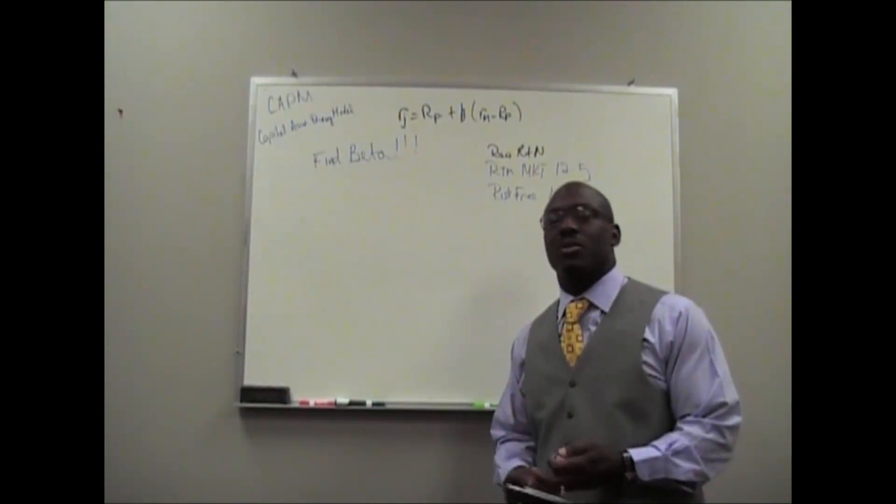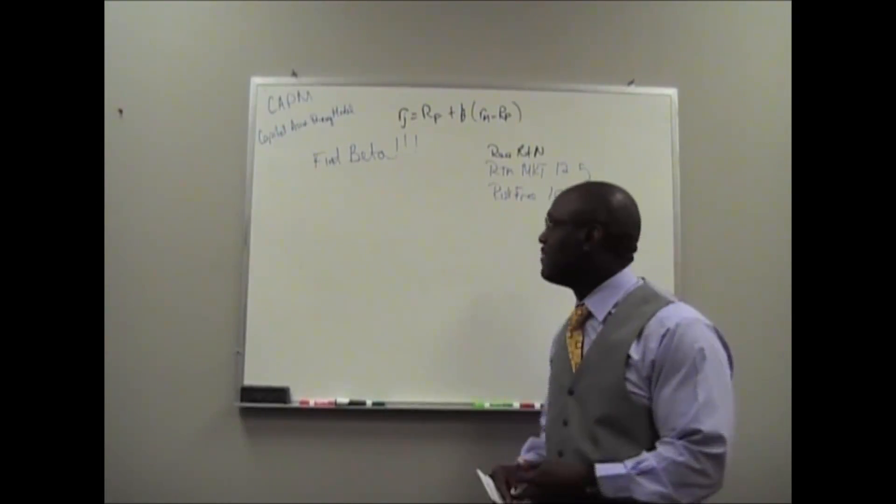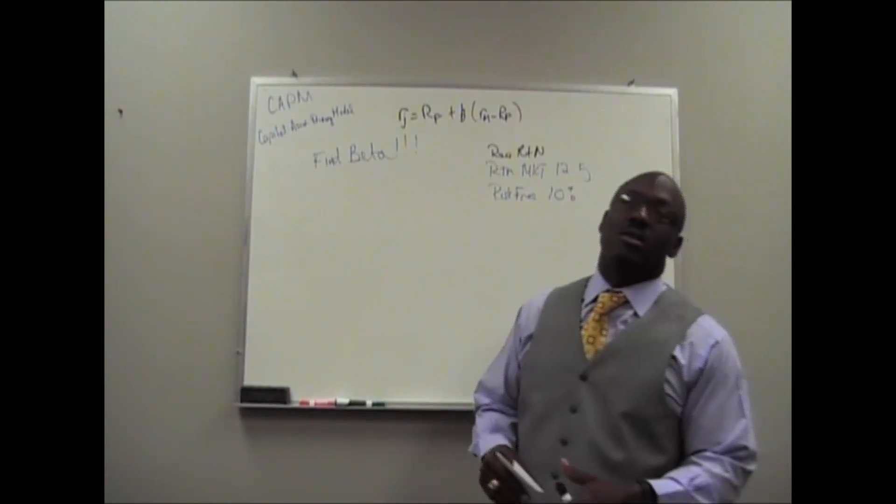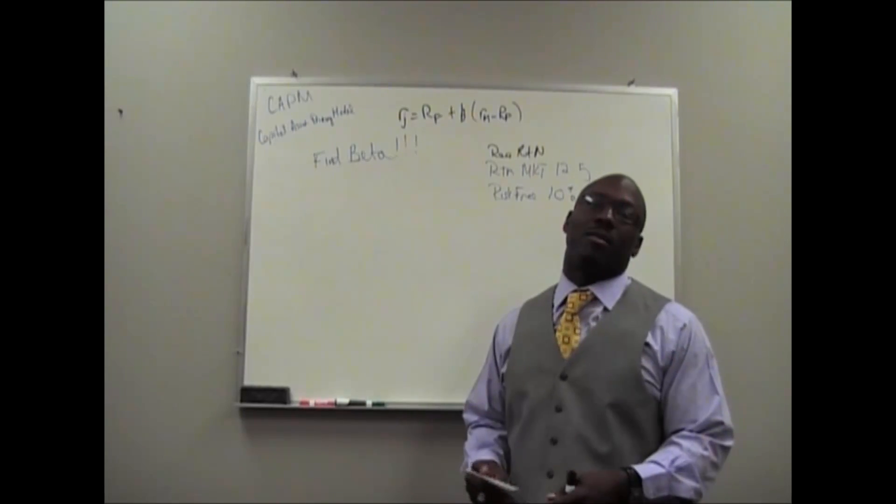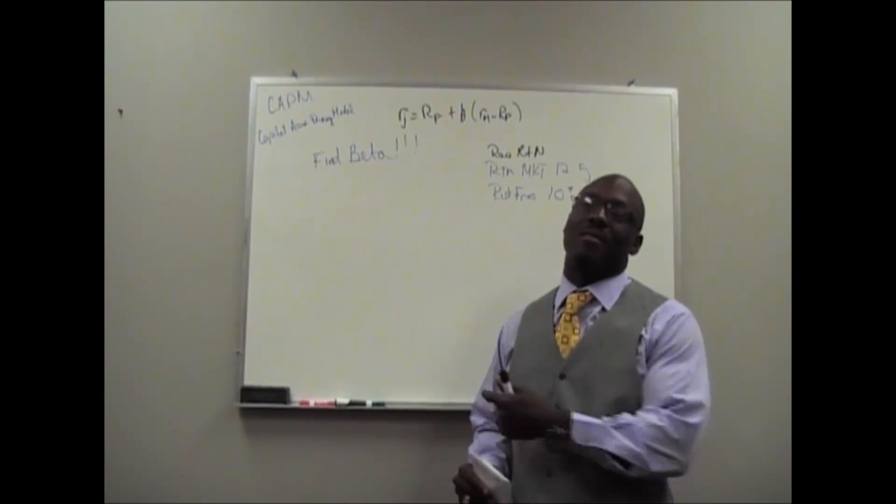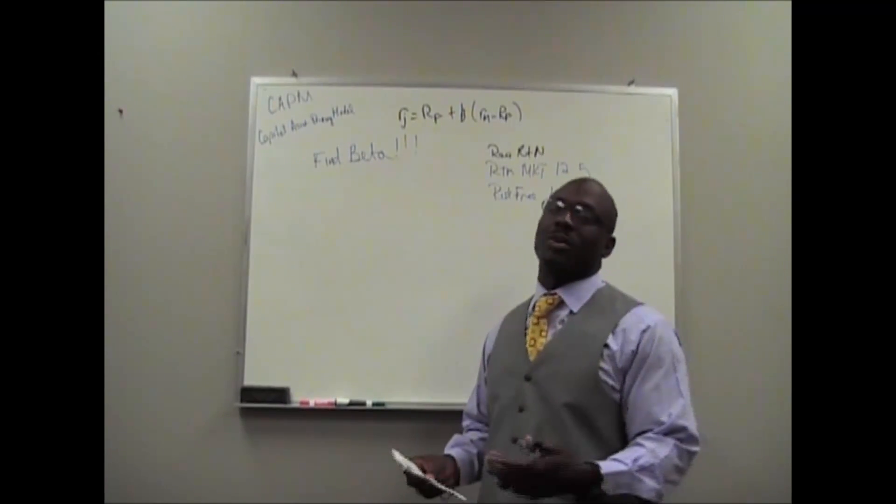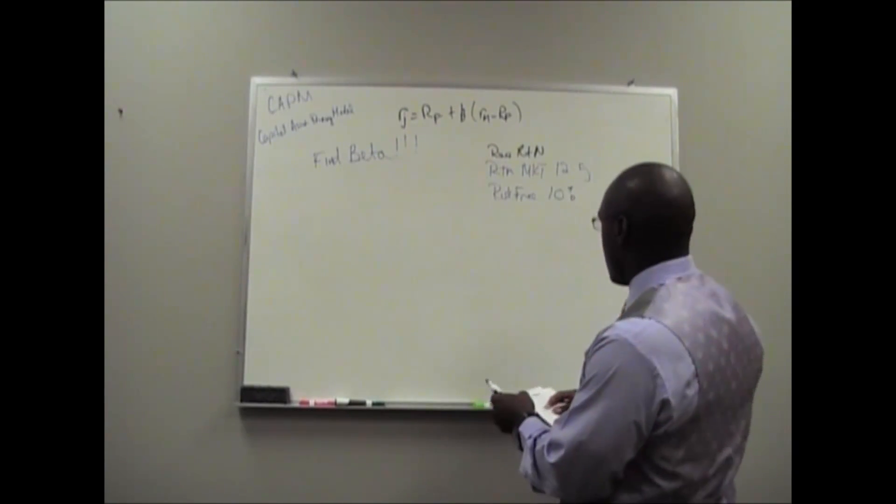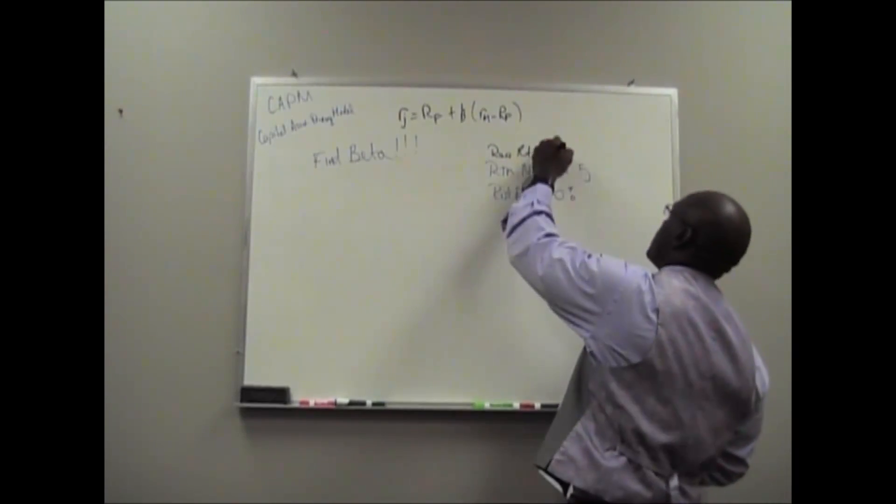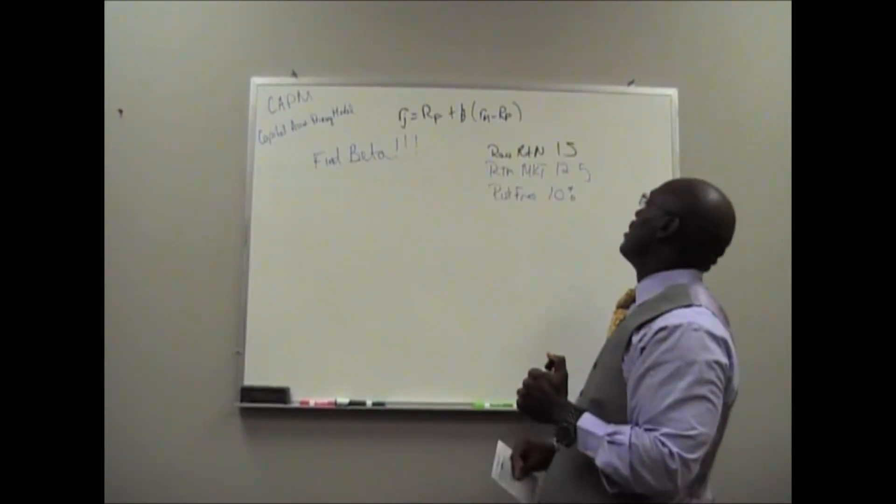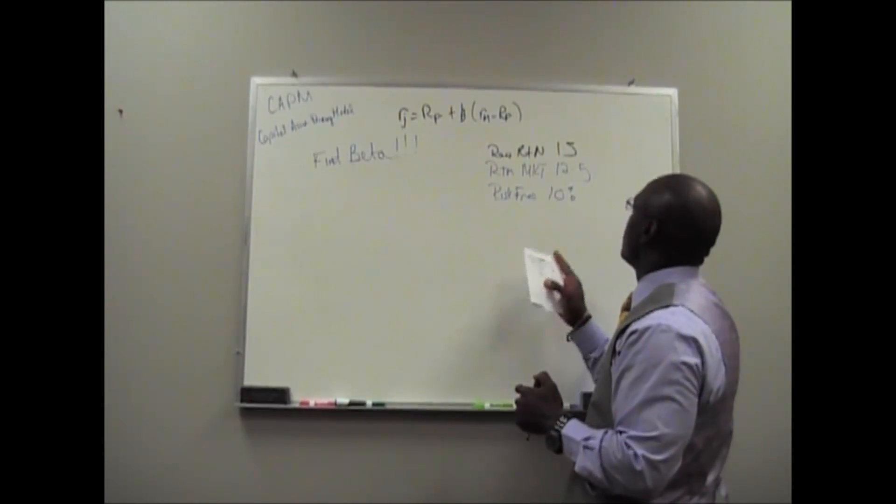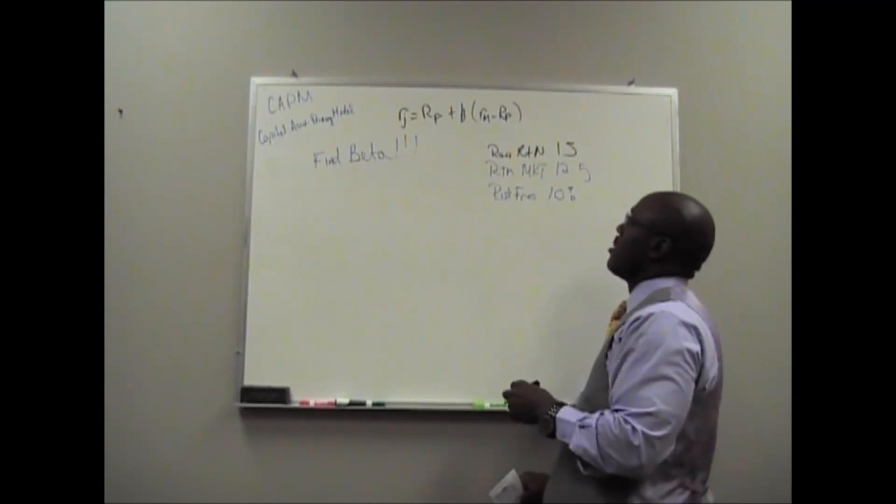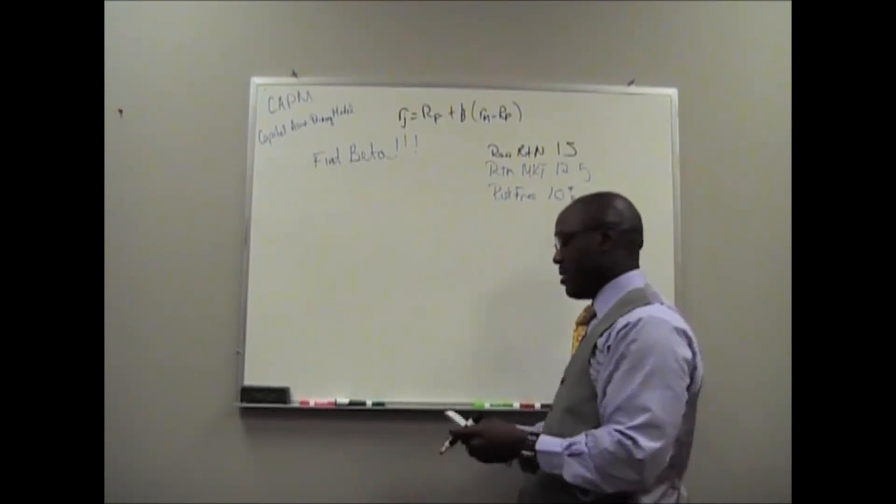Lastly, in this segment on CAPM, we are going to find beta. Now, as I stated in the first segment, you can find the actual beta by performing regression, but this is finding the beta as a missing element of the capital asset pricing model. So, required return is 15, the return on the market is 12.5, and the risk-free rate is 10. And we're to find beta.